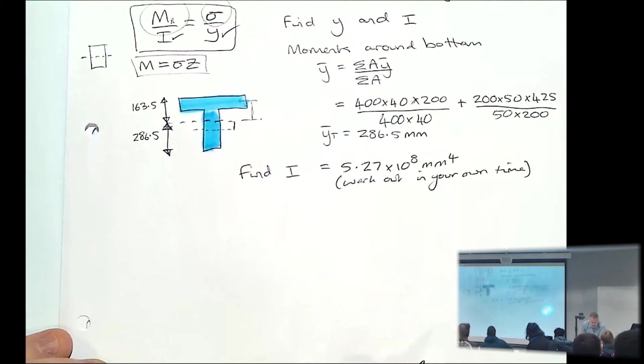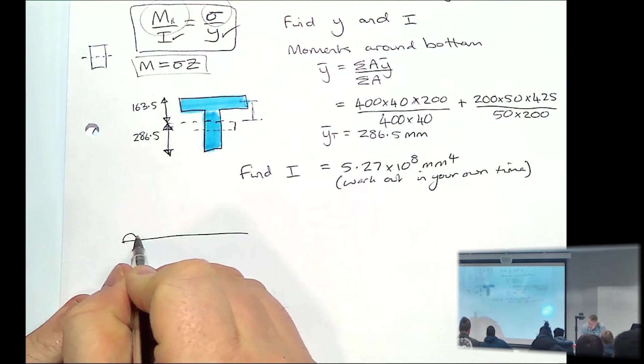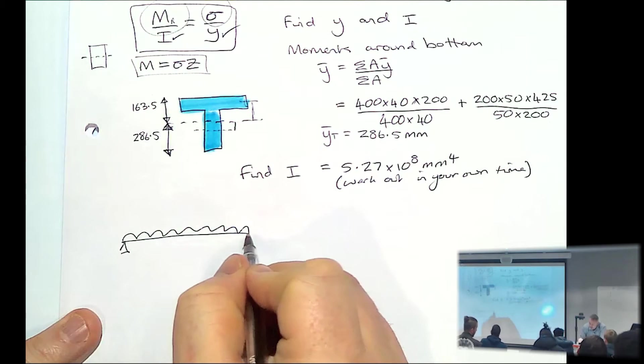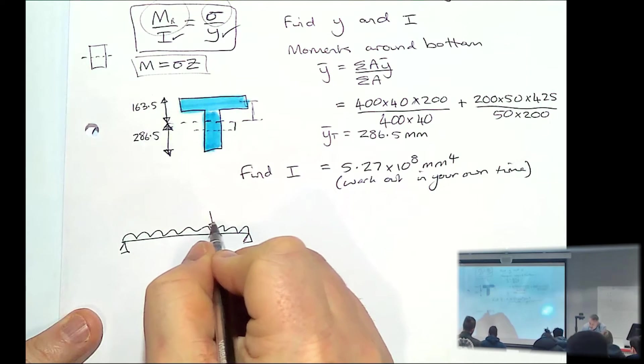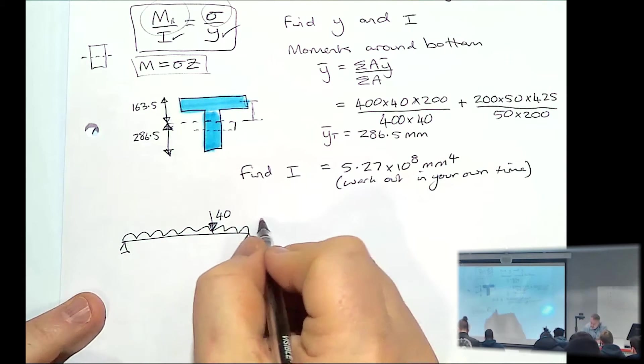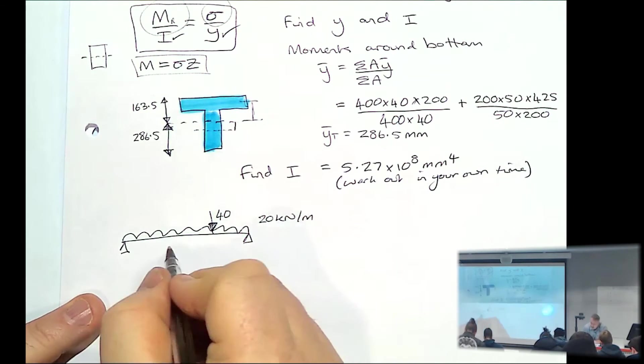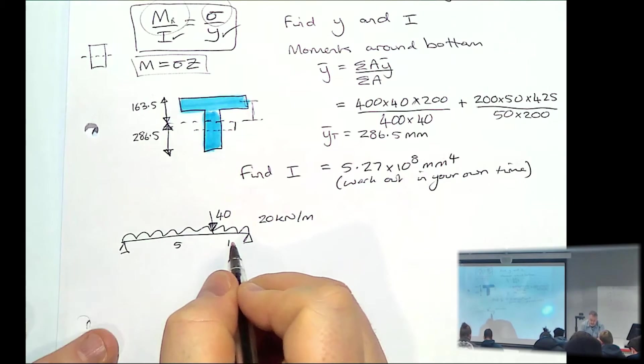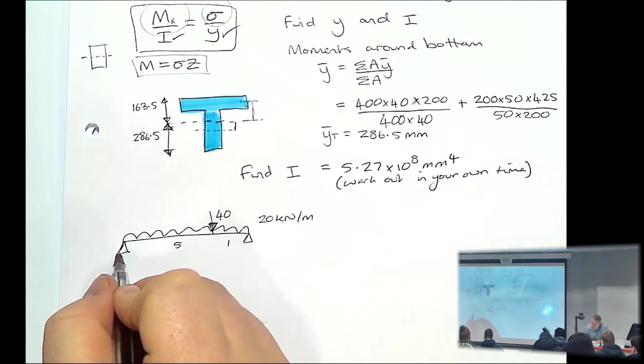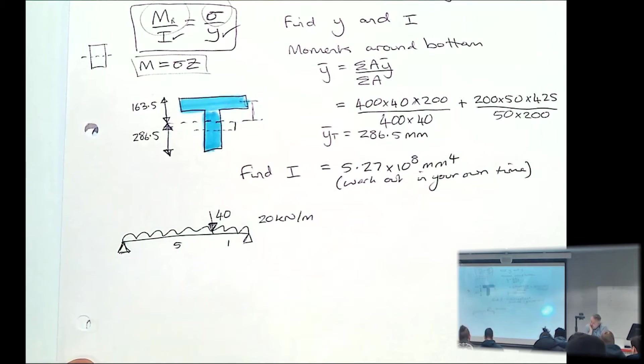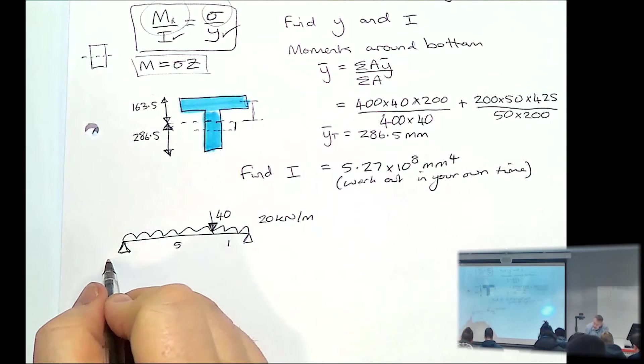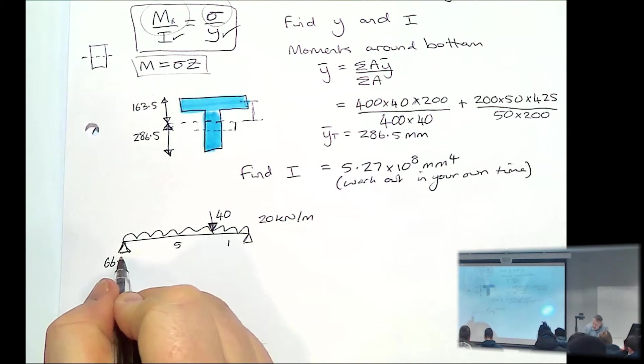So in terms of our moment, I'll just draw out this beam again. You'd have to work out what the reactions are. You find out the reaction on this side is 66.7, and the reaction on this side is 93.3.